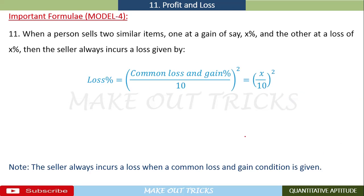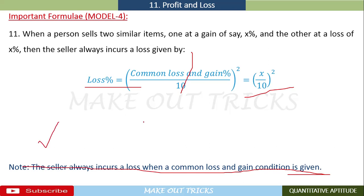When a person sells two similar items — one at a gain of x% and the other at a loss of x% — the seller always incurs a loss. The loss percentage formula is: (x/10)² = (common gain or loss / 10)². The note to remember: the seller always incurs a loss when a common loss and gain condition is given.